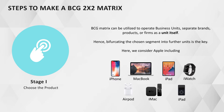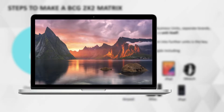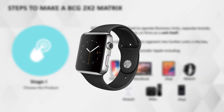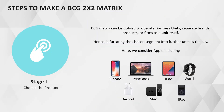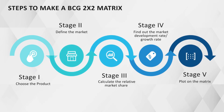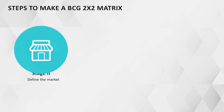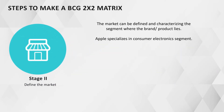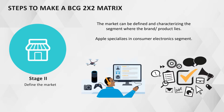Here, we consider Apple products including iPhones, MacBooks, iPad, iWatch, AirPods, Apple TV, and iPod. Stage 2: Define the market. The market can be defined by characterizing the segment where the brand or product lies. Apple specializes in the consumer electronics segment.